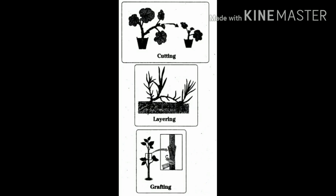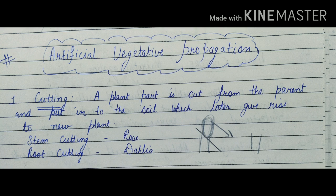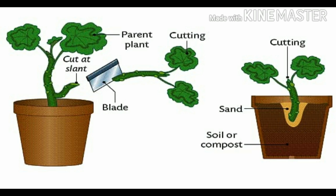Now let us learn the artificial methods of vegetative propagation — that is, cutting, layering, and grafting. In cutting, a plant part is incised and then put into the soil, where it will ultimately grow into an independent plant.